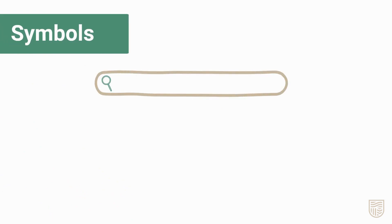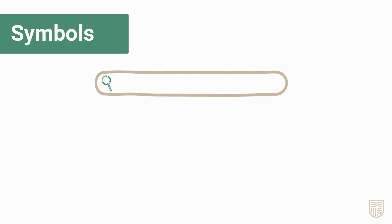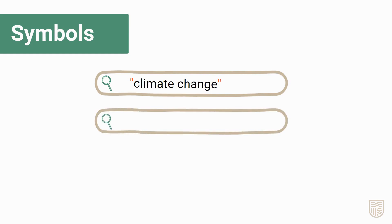You can also use certain symbols to improve your searches. Use double quotation marks around a phrase to keep the words together in your search. For example, to search for climate change, place quotation marks around the two words to make a phrase. Stick to using this with common phrases or words that are meaningful when grouped together. Don't put quotation marks around a full sentence.